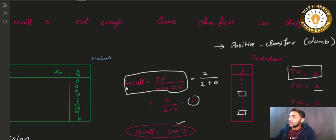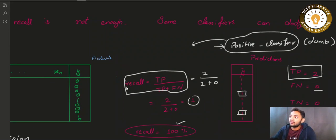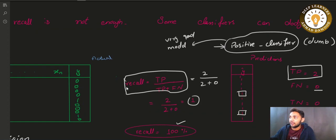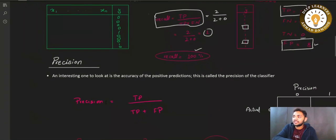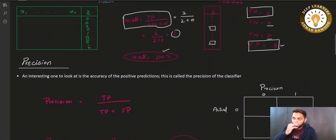Recall is saying this dumb model is a very good classifier — but you can see it is also a dumb model. So you cannot use recall alone in all cases. You need some other measure to resolve the problem we are facing here, so we will move towards precision.